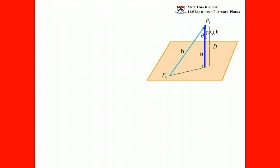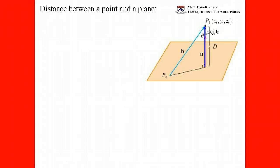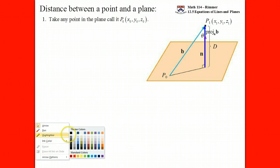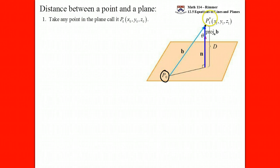You don't have to understand why this formula is what it is; I'm just trying to motivate and explain it. At the end it'll be in a nice box if you want to wait for that. Our generic point out in space that we're trying to find the distance from to the plane is called x1, y1, z1. Our goal is to figure out what the distance is from this point to the plane. The plane will have some equation, and there'll be a particular point on the plane we'll call P0, with coordinates x0, y0, z0.